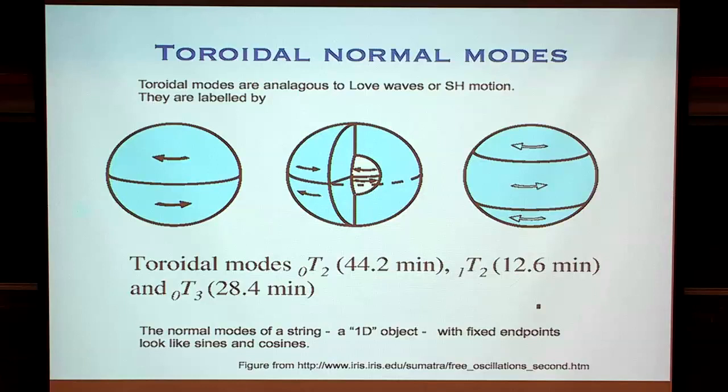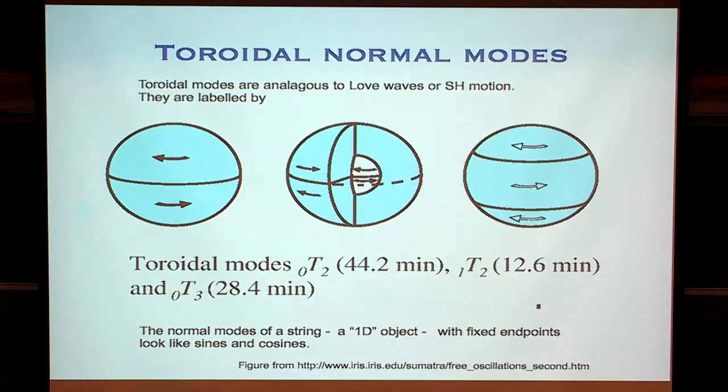The counterparts of the spheroidals are the toroidal normal modes — think of these as twisting modes. They're more analogous to horizontally polarised shear waves, or to Love waves. The first is 0T2. The easiest way to think about it is that somebody is trying to unscrew the Earth: the top moving in one direction and the bottom in the other, but then it moves back again. It's a twisting of the northern hemisphere relative to the southern hemisphere, and back again.